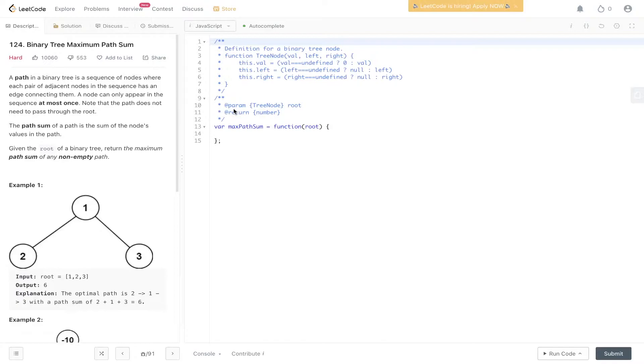A path in a binary tree is a sequence of nodes where each pair of adjacent nodes in the sequence has an edge connecting them. A node can only appear in the sequence at most once. Note that the path does not need to pass through the root. The path sum of a path is the sum of the node's values in the path. Given the root of a binary tree, return the maximum path sum of any non-empty path.